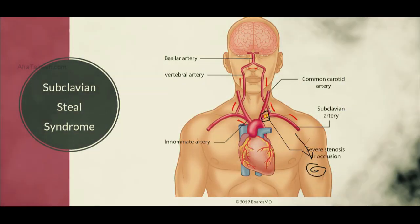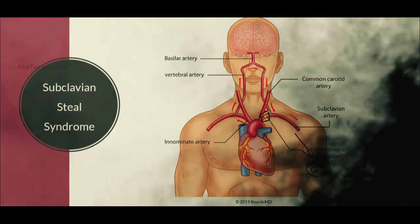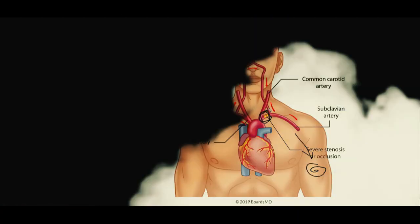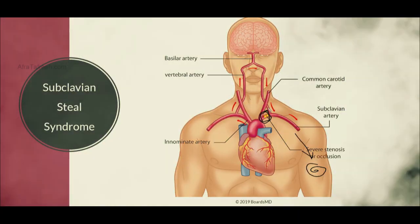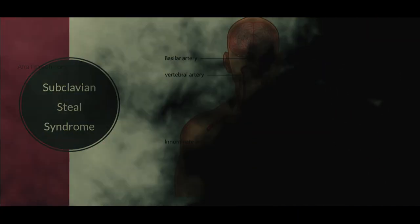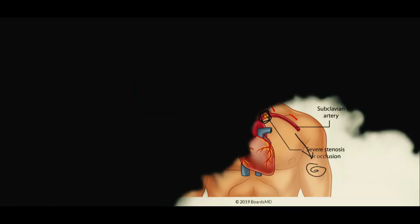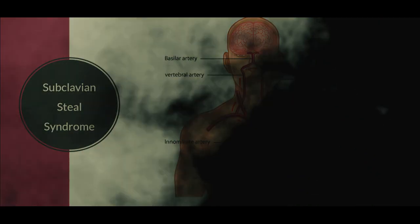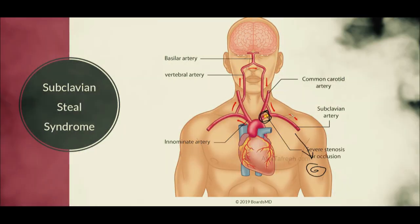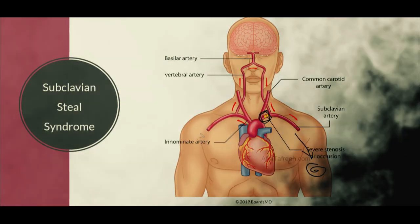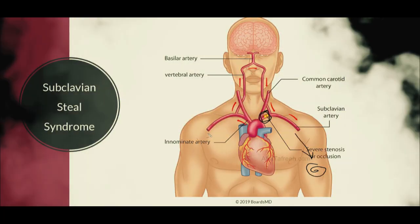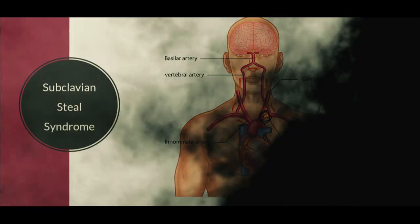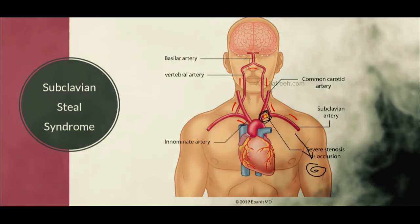Understanding the location here at this proximal subclavian artery is extremely high yield to keep in mind for our patients with subclavian steal syndrome. In addition, because there is insufficient blood flow to the affected side, there's going to be a decrease in blood pressure on this side compared to the healthy or unaffected side. This is also something that frequently shows up on examinations — the difference between the two arms when we measure the blood pressure through that brachial artery.